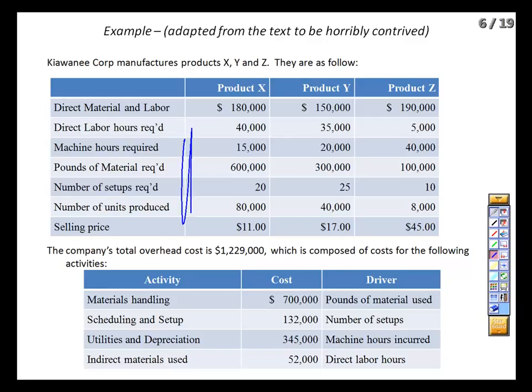We've got about $1.2 million of total overhead made up of four items. Each of these four items has an individual driver — our handling costs are based upon pounds of material used, for instance. But we need to begin with our traditional costing to see where we would be if we used a single driver, such as labor hours.